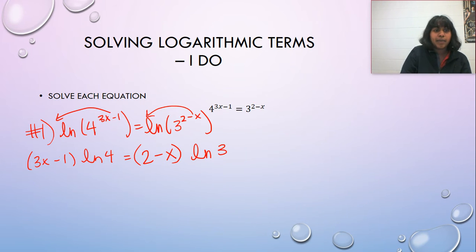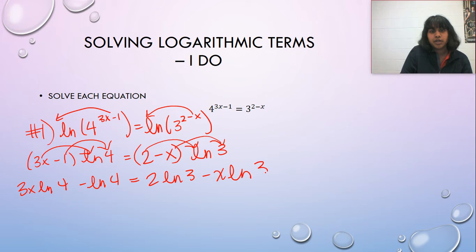And what ends up happening here is I can distribute this value, and so this becomes 3x times the natural log of 4 minus the natural log of 4 is equal to 2 natural log of 3 minus x natural log of 3.